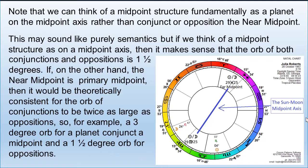What's interesting here is that we're using the same orb regardless of whether it's conjunction or opposition. In a way, this seems like it might contradict how we do orbs in vibrational astrology, because normally if we use a one-and-a-half degree orb for conjunctions, we would use half that orb for an opposition. However, what's really happening is that both midpoints — 29 Virgo 25 and 29 Pisces 25 — are equal in power.